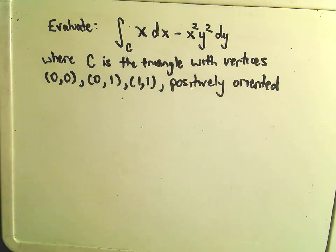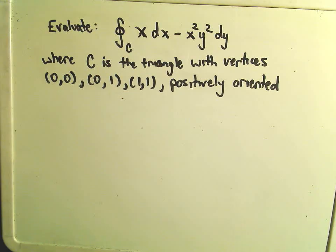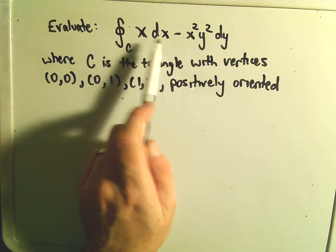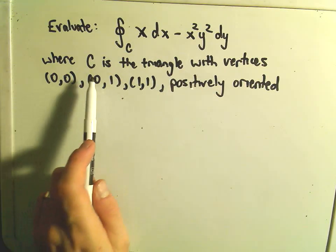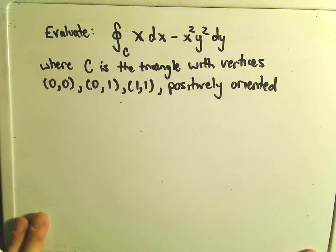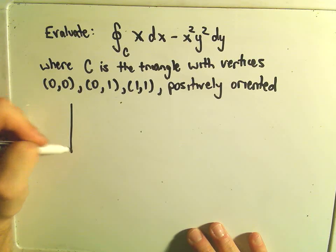Okay, so we're going to evaluate this line integral. I'll put the little circle on there again to emphasize that it's positively oriented. We're going to integrate the line integral x dx minus x squared y squared dy, and c is going to be the triangle with vertices at 0, 0, 0, 1, and 1, 1, again positively oriented.